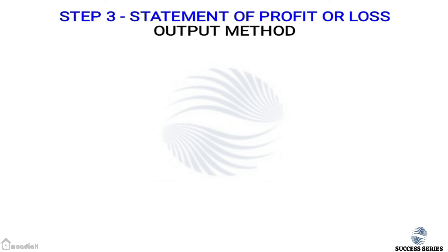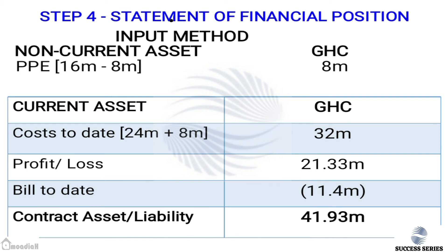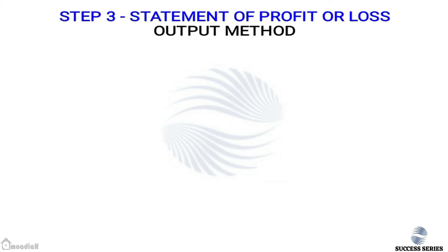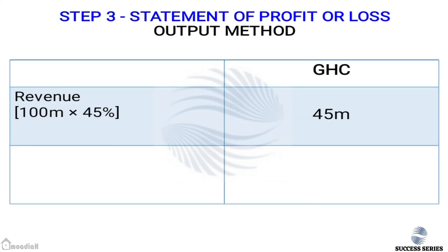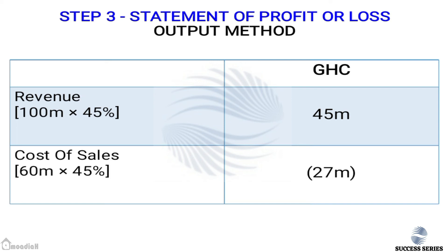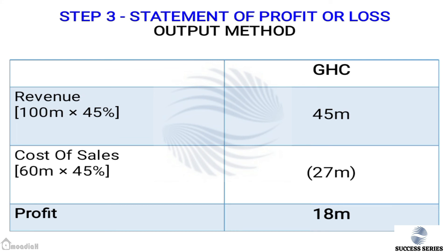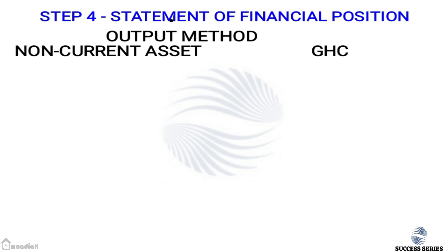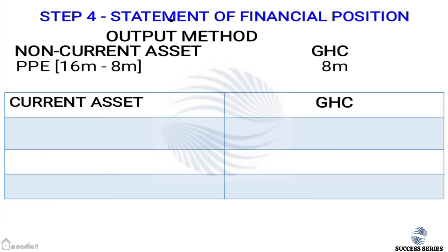Now for the output method: with a progress of 45%, revenue = 100 million × 45% = 45 million. Cost of sales = 60 million × 45% = 27 million. Profit = 18 million. For the statement of financial position, PPE = 60 million minus 8 million depreciation = 52 million.